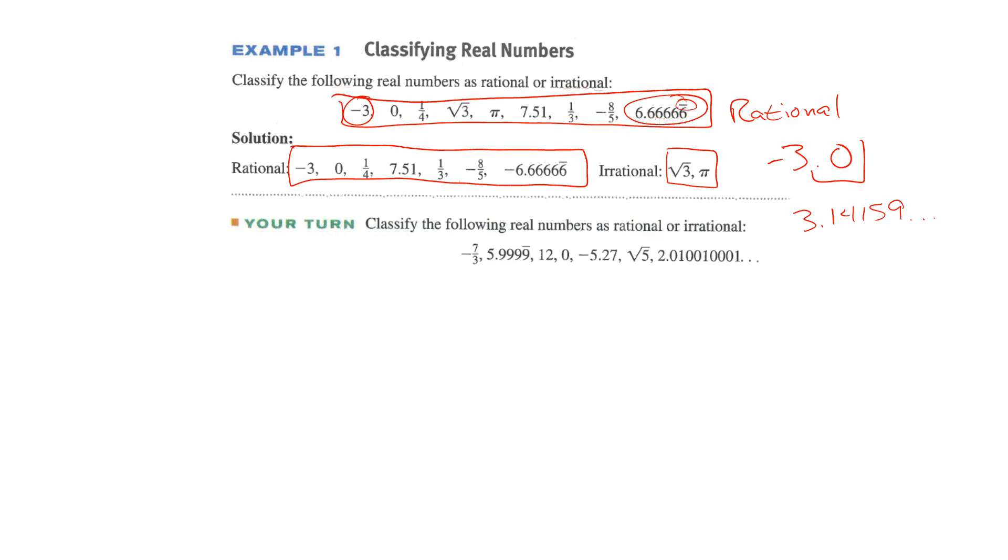So the rational numbers would be everything except for the square root of 3 and pi. Pi is 3.14159, etc. It's not repeating and it's not stopping. Your turn. Let's classify the following real numbers as rational or irrational. Pause the video for a second. Let's figure out which ones are rational. Negative 7 thirds, rational. This is repeating, so it's rational. 12, rational. 0, rational. Negative 5.07, it stops. It's rational. Square root of 5, irrational. And this one here, dot, dot, dot, repeating. Is it repeating? Not really. It's one zero and then two zeros and then three zeros. So these two right here are the irrational and everything else was rational.